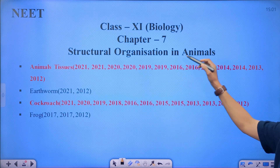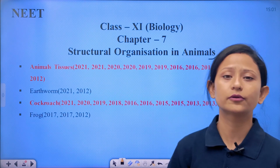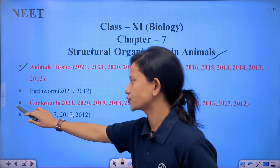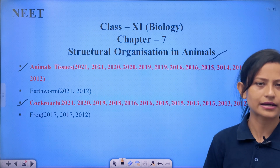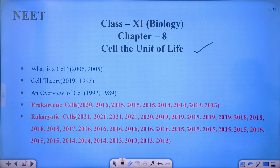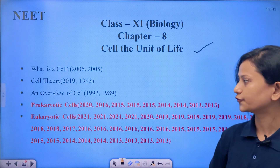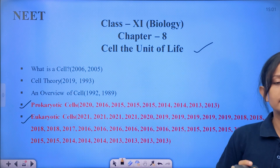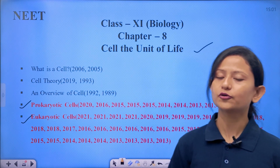Next chapter: Structural Organization in Animals. The important topics are animal tissues and cockroach — many questions come from these. Next, Cell: The Unit of Life — the important topics from a NEET point of view are prokaryotic cell and eukaryotic cell, with their subtopics being very important.